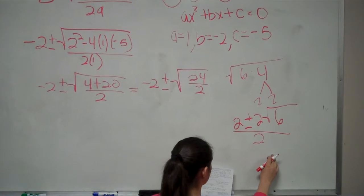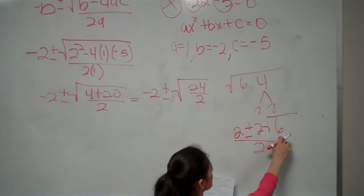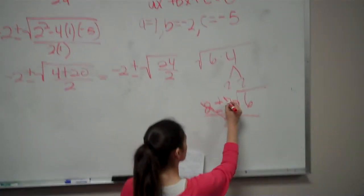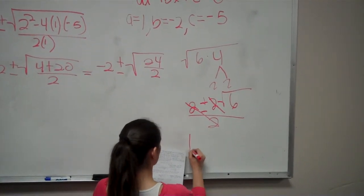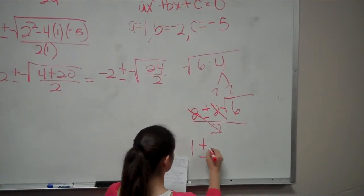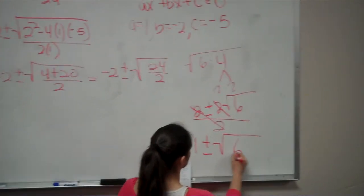And you can't divide the number inside the square root, so therefore your answer is 1 plus or minus the square root of 6.